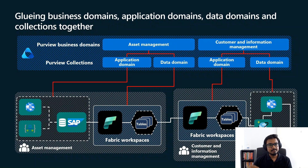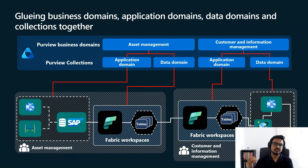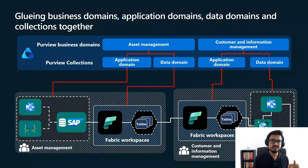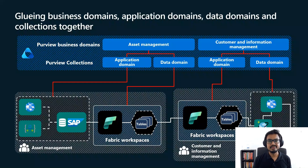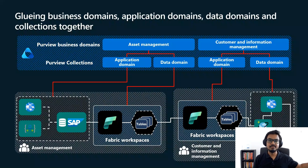Next, we went into the concepts associated with data mesh like domains. We talked about application domain, data domain, and business domains. The next piece was to map these into different products. We saw how Microsoft Purview is mapped into the business domain piece, how Microsoft Fabric is mapping more into the data domain piece, and how applications like SQL database or other OLTP backends are associated with application domains.